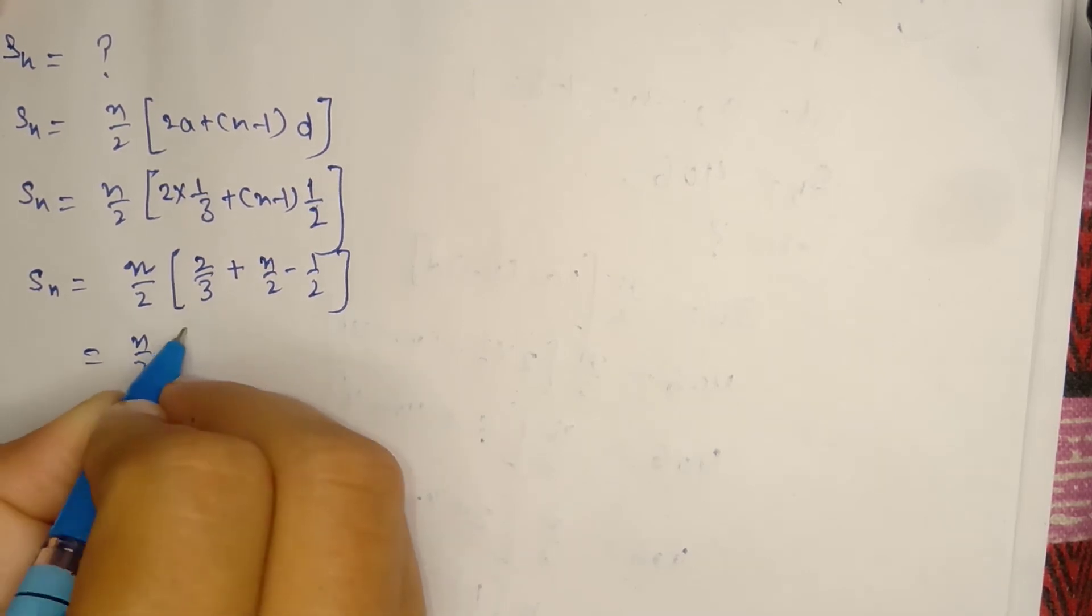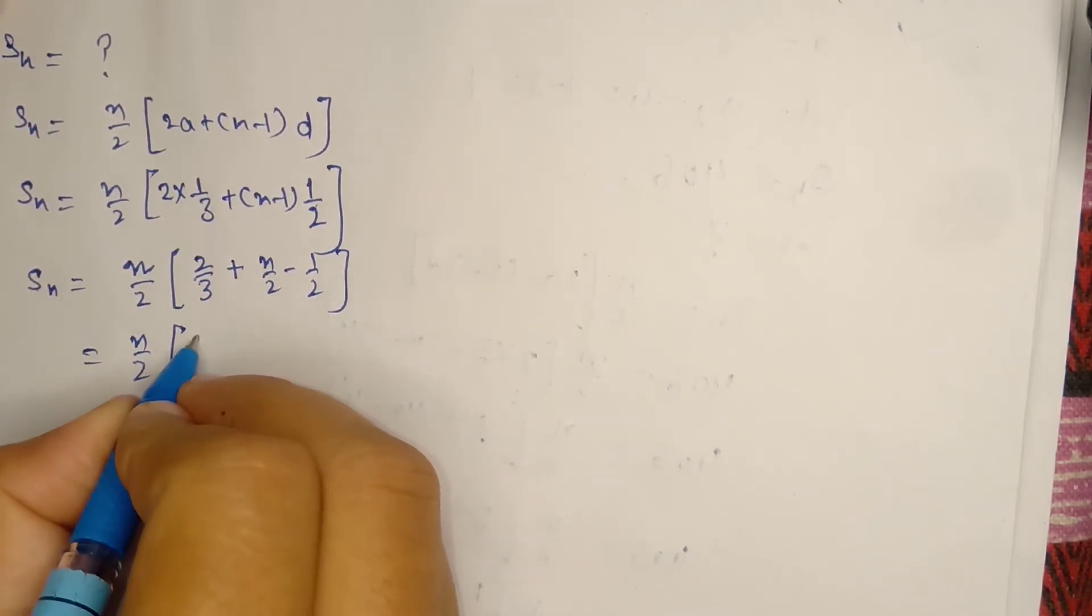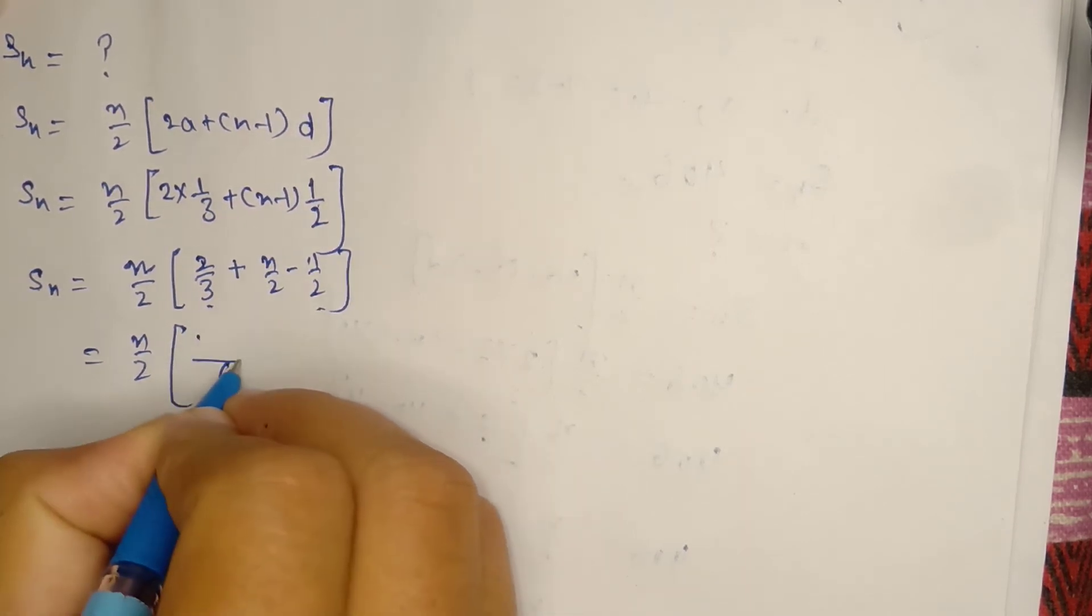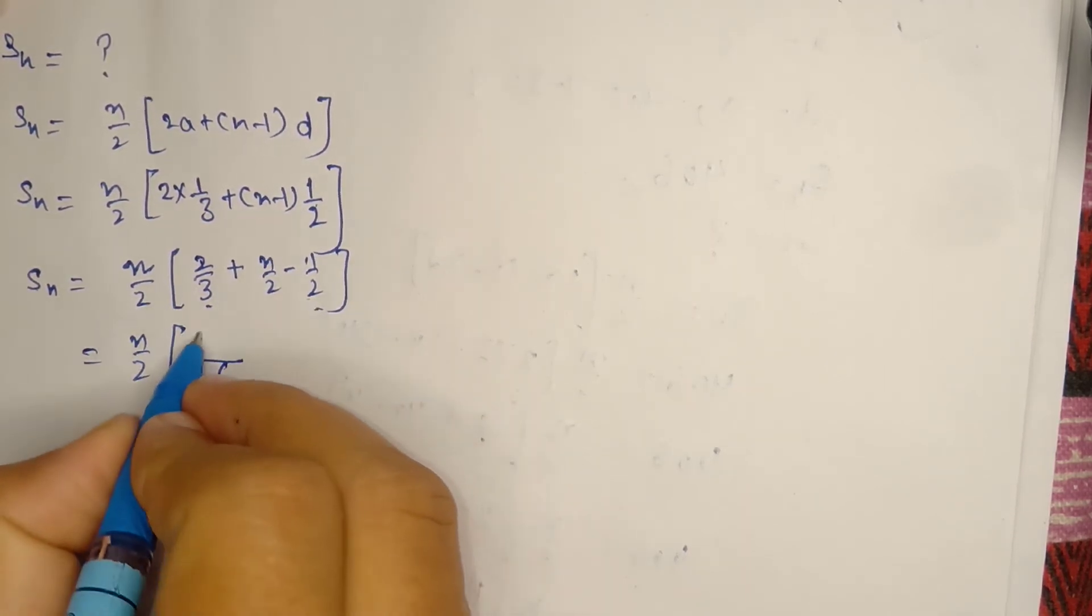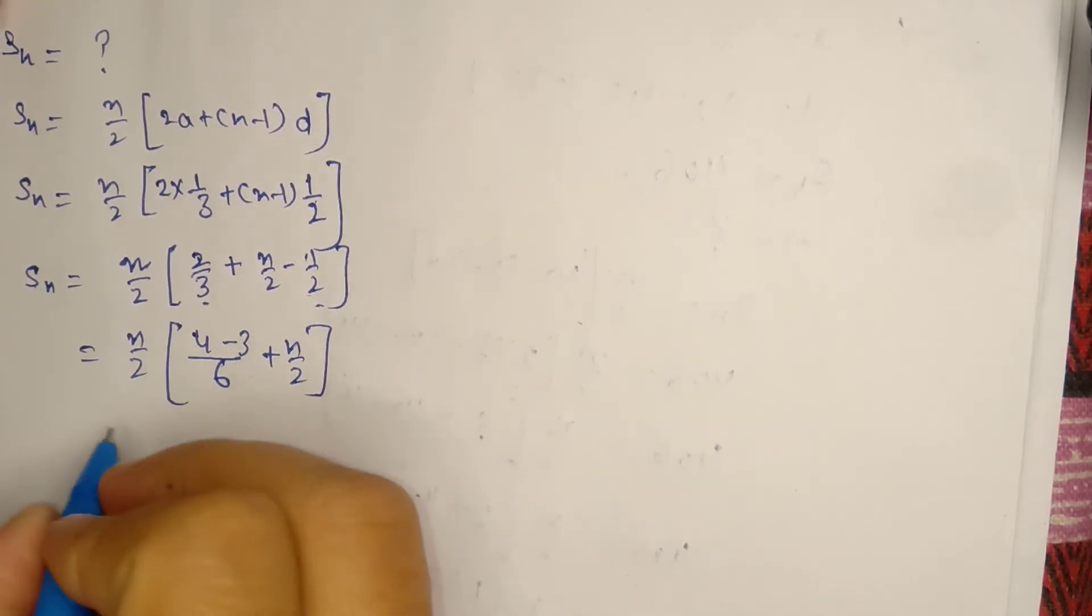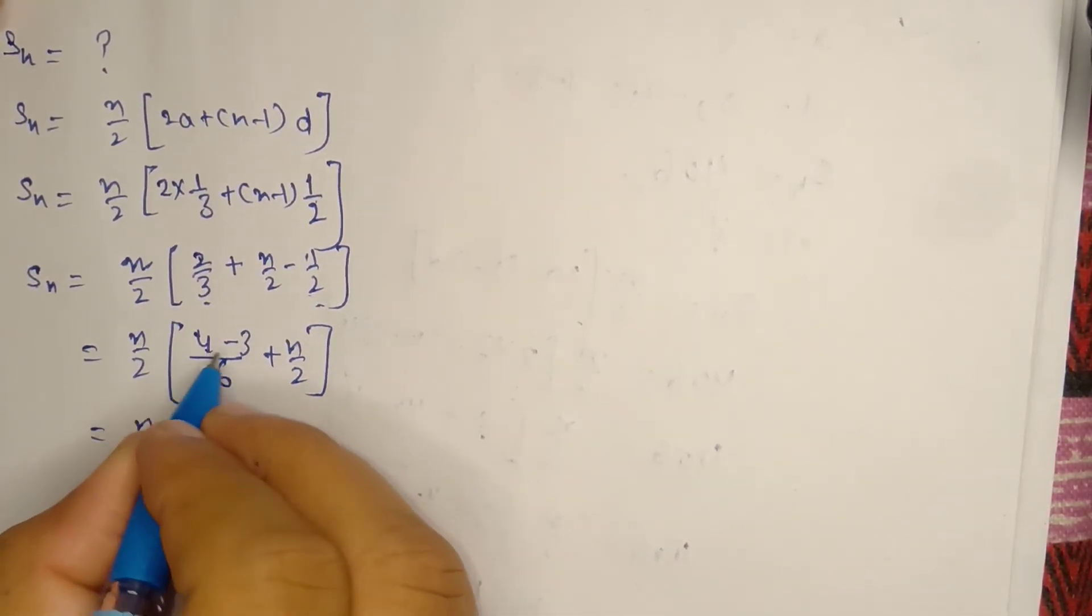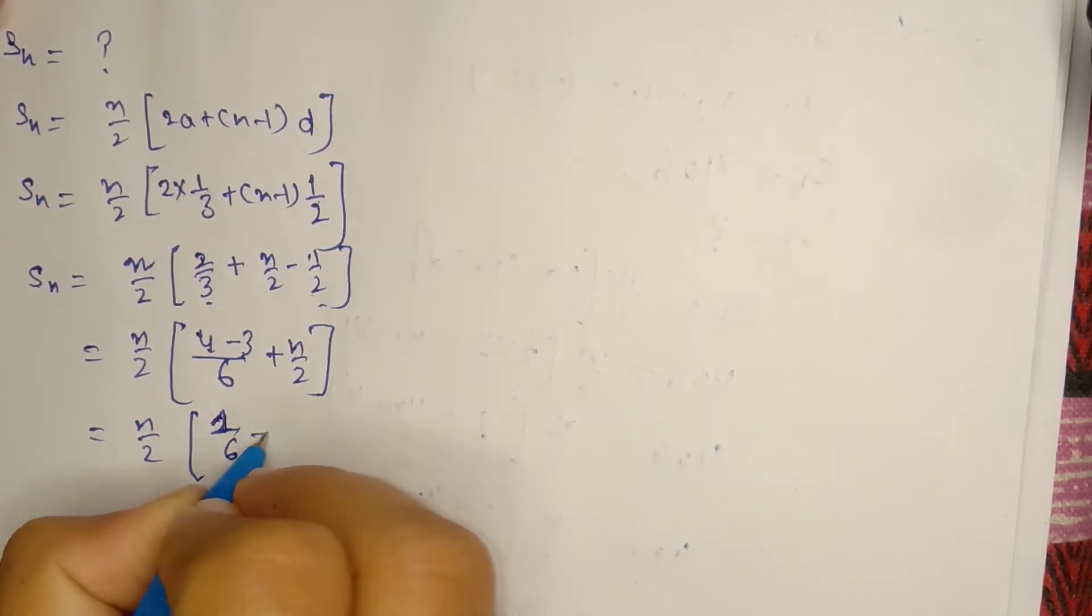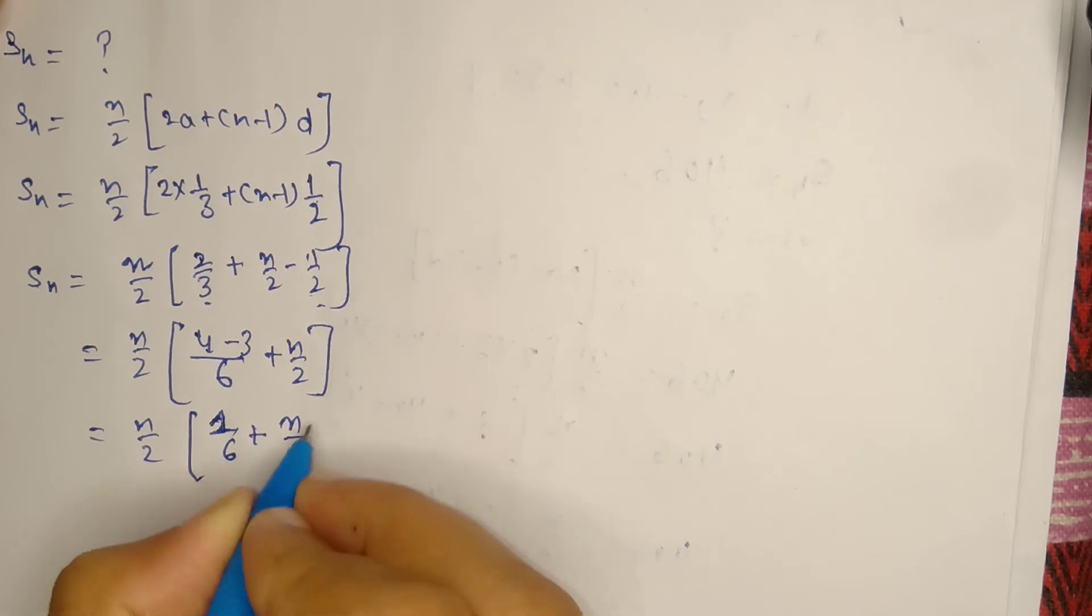This equals n/2 times [2/3 + n/2 - 1/2]. Taking LCM, n/2 times [(4 - 3)/6 + n/2] = n/2 times [1/6 + n/2].